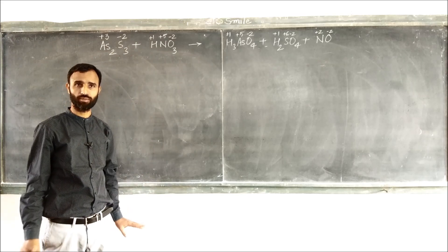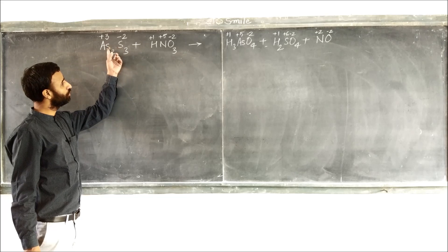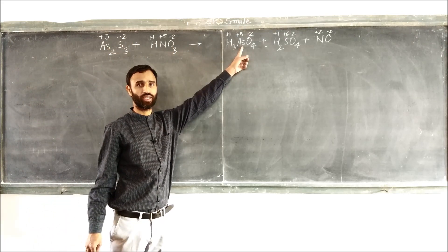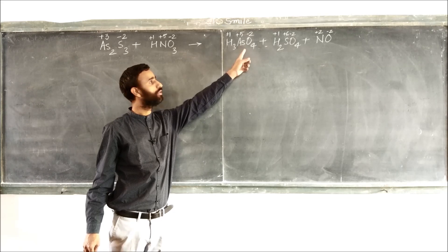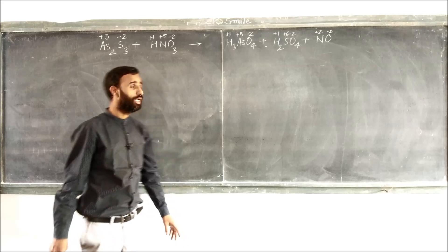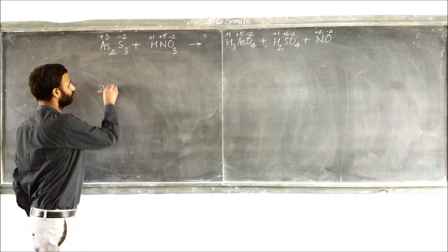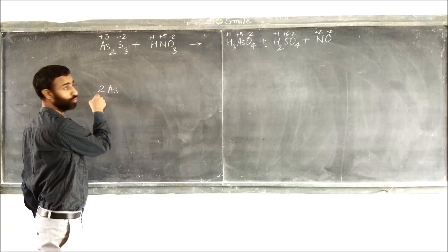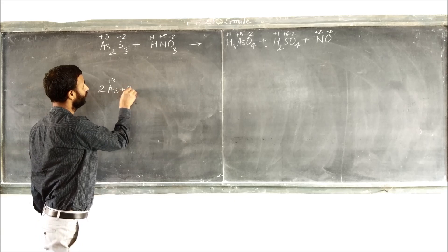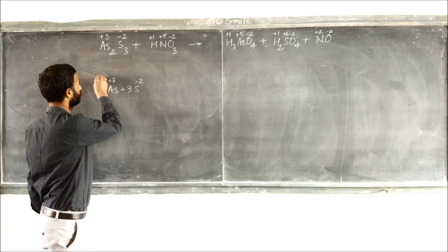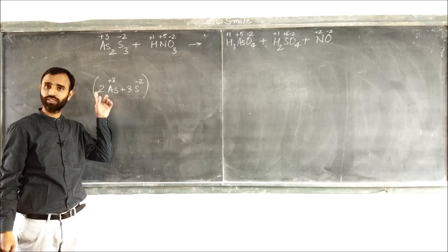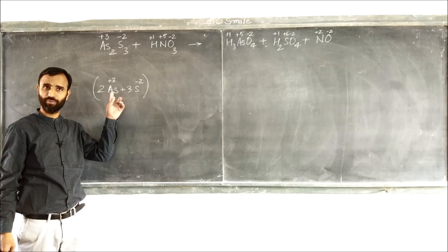Now AS2S3. In this case, arsenic changes into arsenic acid and sulfur changes into sulfuric acid. So write it out like this. 2 As plus 3 and 3 sulfur minus 2, and keep it in bracket because we cannot change its composition. Formula remains same.